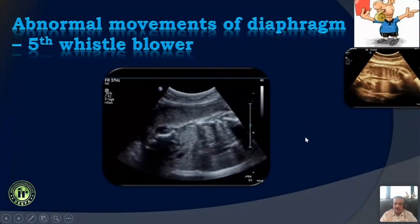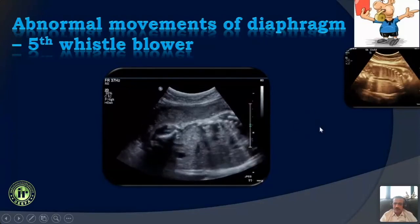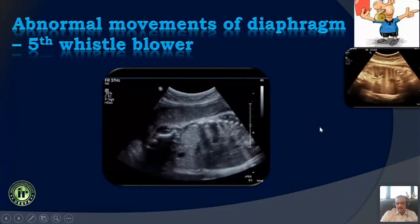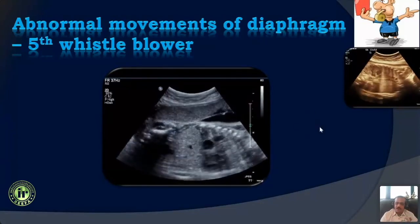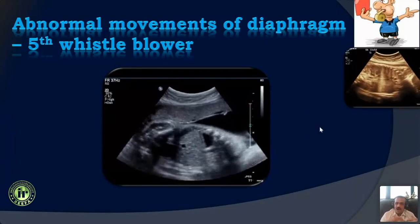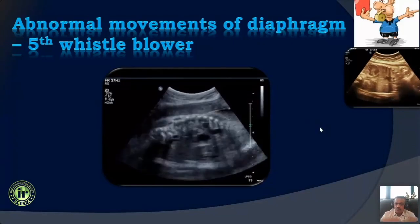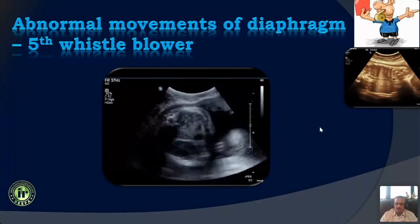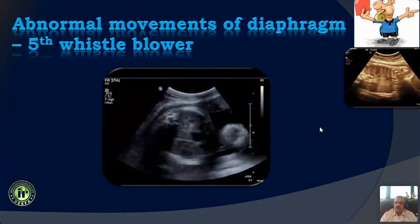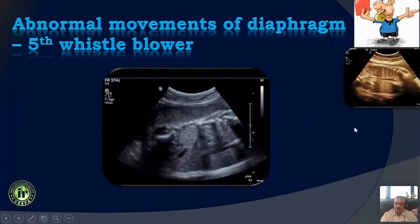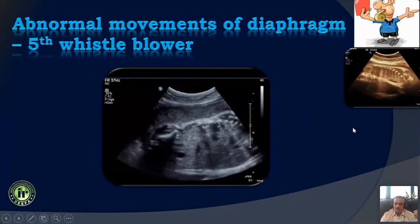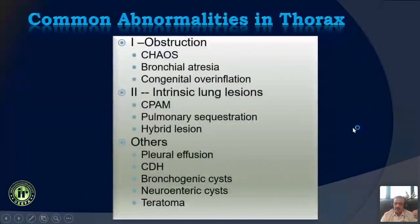This is seen classically, for example, in a diaphragmatic hernia. As mentioned earlier, very often lung abnormalities are picked up not because we are concentrating on the lungs, but because we see one of these five whistleblowers, which makes us aware that something is going wrong.